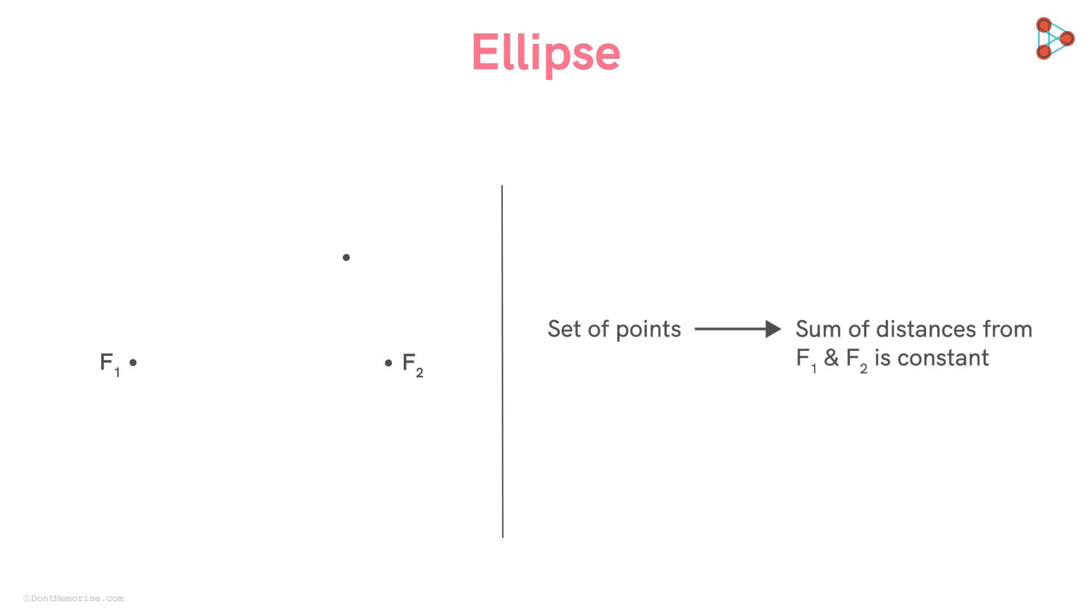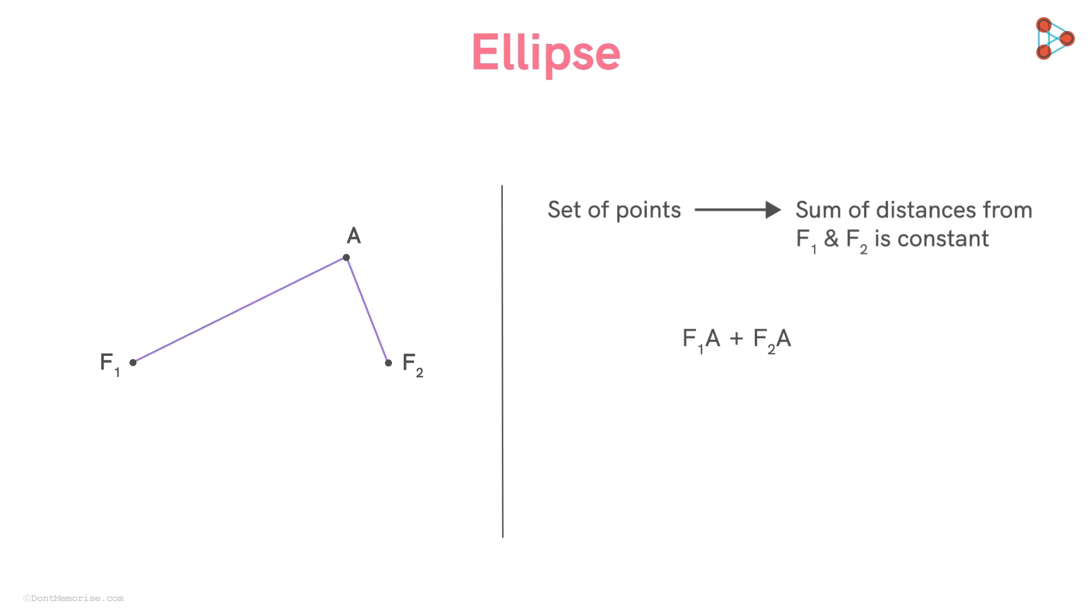Suppose we take a point here. Let's name it A. Now let's say the sum of its distances from point F1 and point F2 is some number alpha. Now consider all such points whose sum of the distance from these two points is exactly equal to alpha.